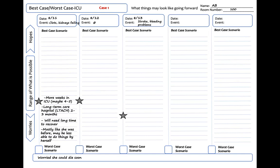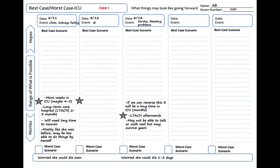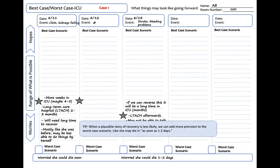I then add in details about the best case. Now, if we can reverse these processes, she will spend a very long time in the ICU. She would also still need an LTAC, and she may not be able to walk or talk well, but may survive years. I update the worst case, writing that we are worried she could die in one to two days. As a teaching point, when a plausible story of recovery is less likely, we can add more precision to the worst-case scenario — like she may die in as soon as one to two days.